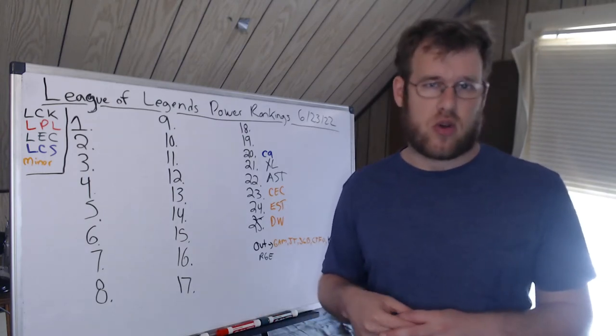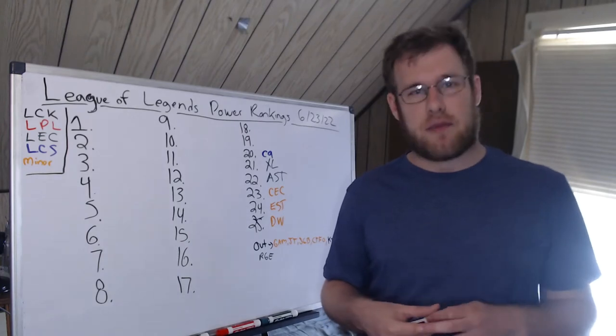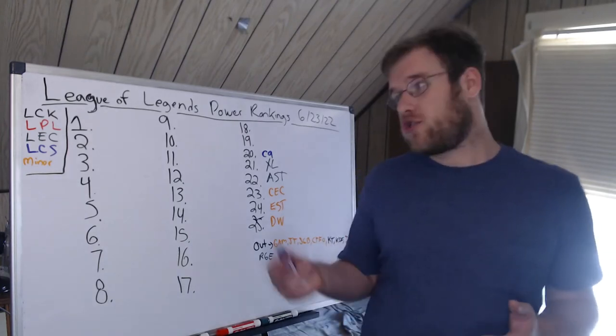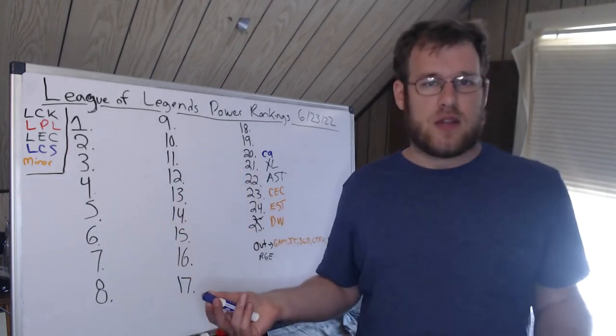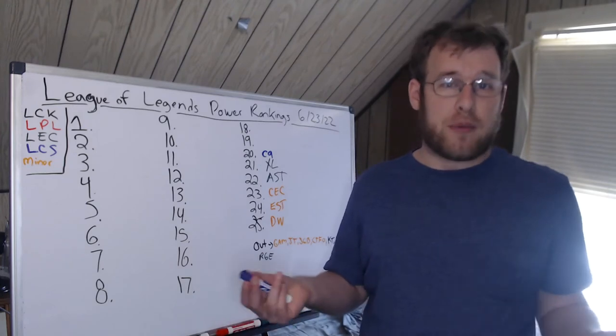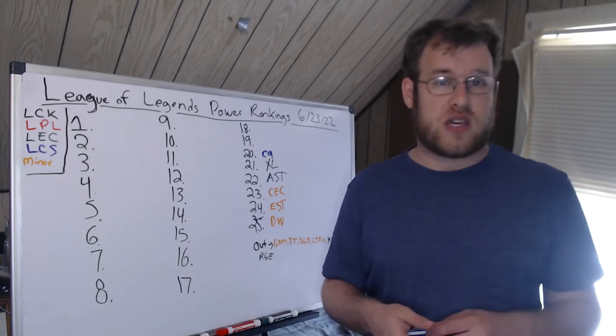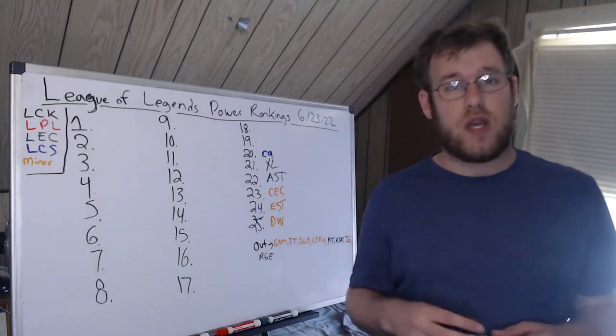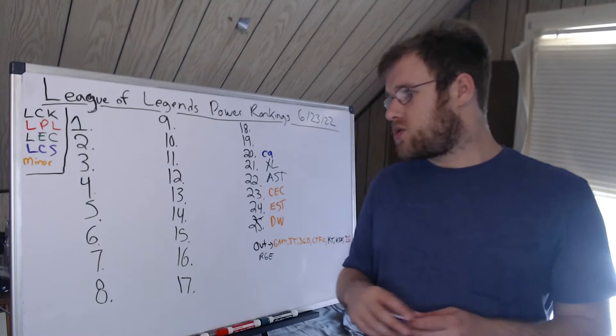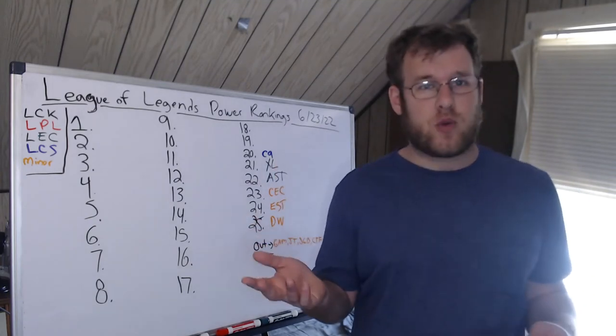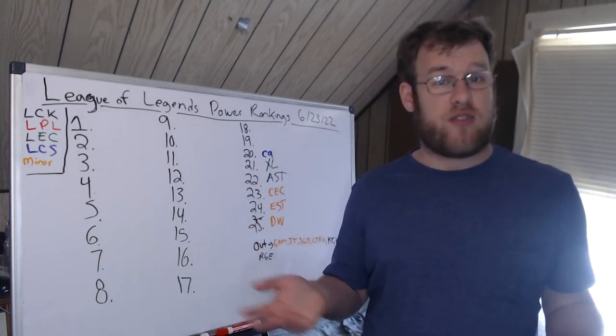They lost to EG, Golden Guardians, and TL. Two of those teams—the Golden Guardians loss is pretty embarrassing. You don't want to lose to Golden Guardians no matter if you have an academy roster or not. But EG and TL are two teams on this list, probably in the conversation to be going to Worlds.